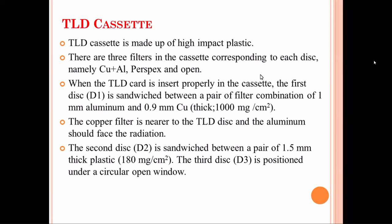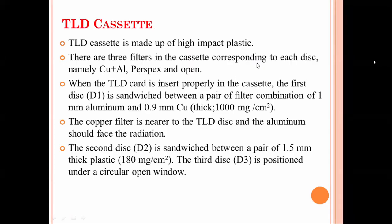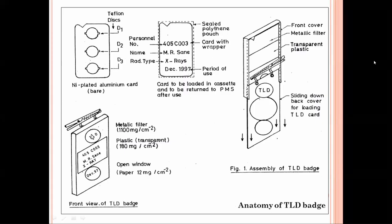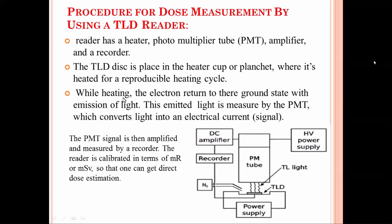The TLD cassette is made of plastic material with three filters: copper, aluminum, and open window. Copper is sandwiched between aluminum layers in the cassette. The three filter positions correspond to different radiation measurement zones. The discs D1, D2, and D3 are placed in the respective positions. When working in a radiation area and using TLD, it measures your dose at each part of the body.